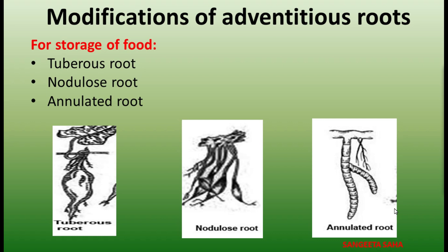Now coming to the modifications of adventitious roots. Modifications can be of different types — for storage of food or for mechanical functions. For storage of food, the first modification is the tuberous root, where roots arise from the node and are swollen without any proper shape. They occur singly and are found in sweet potato. Next is the nodular root, where only the apex part of the root becomes swollen like single beads and appears as clusters, found in mango, ginger, and turmeric. The annulated root looks like a number of disks placed one above the other.